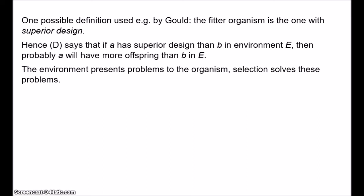Unfortunately, it's very difficult to see how this can be applied in general. How do we tell whether one trait is better at solving a particular problem than another? Furthermore, organisms have a variety of different traits that solve different problems, often with trade-offs between them. How do we weigh up all of these different aspects to determine which is the fitter organism overall? What biologists would actually do to answer these questions is just count the offspring — that's how we measure fitness in practice. But superior design is supposed to be something different from reproductive success, so there must be some other way to identify it, if only in principle.